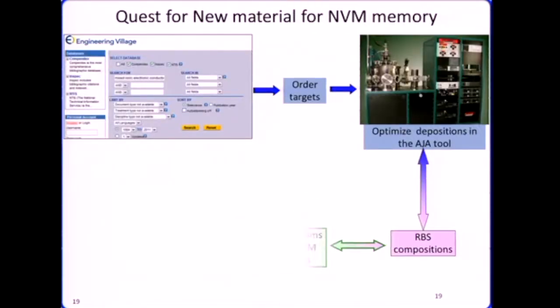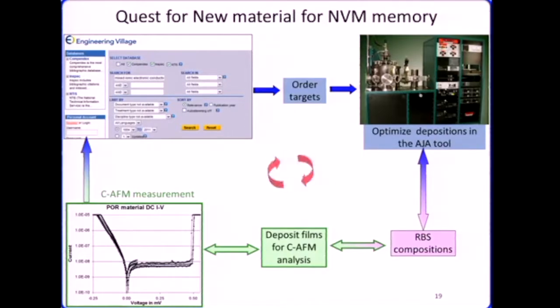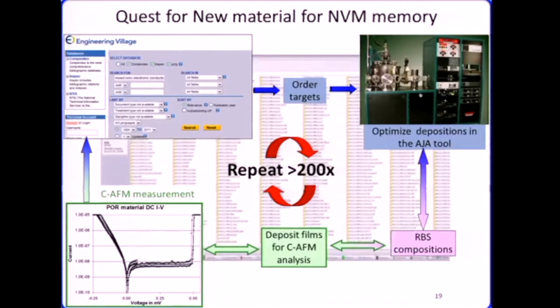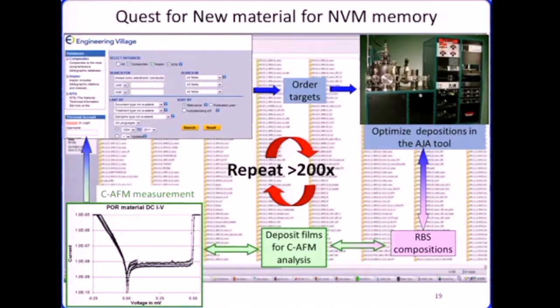And so what they were able to do is to start from one chemistry, deposit the surface, do XPS measurements, deposit the film for conductive AFM analysis, do the IV measurements and repeat that 200 times. So in a matter of one year, they were able to identify two or three candidates for the ideal material that showed the right electrical properties to develop their non-volatile memory process. Now once you know what films you are going to use, the next step is to convert those films into actual devices.